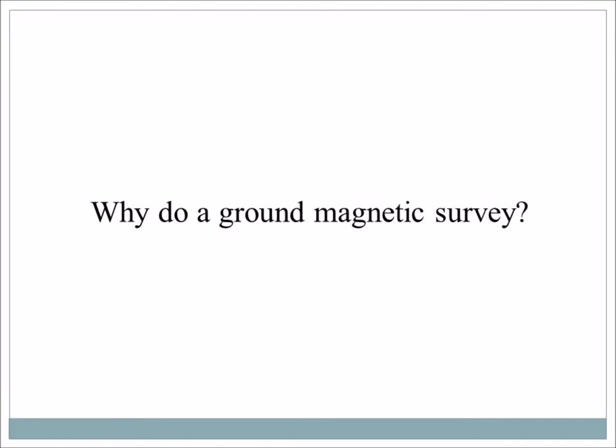Why do we do a ground magnetic survey to find dolerites? On the field school, they're mostly mining the UG2 or different layers in the Bushveld, and these dikes cause loss of ground — so they can't mine there. It may also make the ground unstable, so they need to know where to put extra support in. That's where these ground surveys come in.